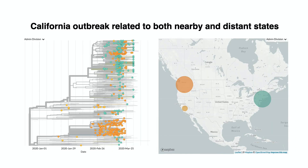In California, we also see evidence of multiple introductions between states. Cases from California span the genetic diversity of the tree, grouping together with samples from both nearby Washington State and New York. This is evidence for transmission between California and both nearby and distant states.